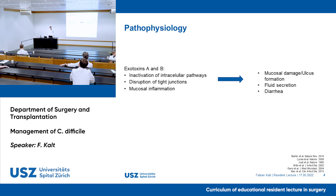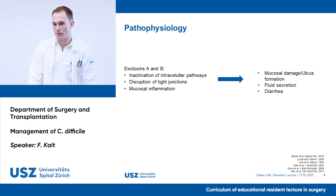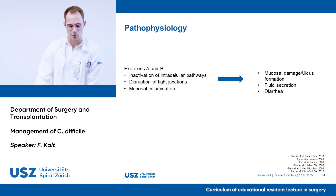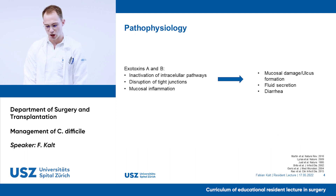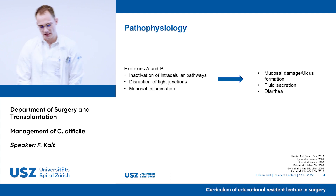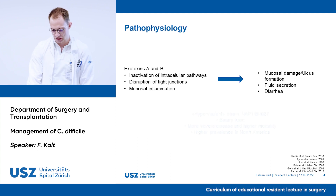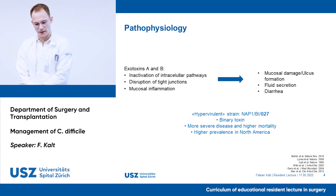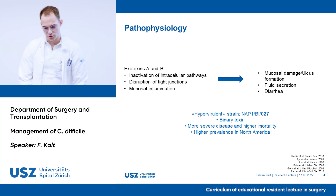Clostridium difficile is usually not invasive and there are also strains which don't produce toxins at all. There are two types of toxins, A and B, whereby toxin B is around 10 times more virulent than toxin A. The toxins disrupt the tight junctions of the mucosa, interact and inactivate intracellular pathways, and generate mucosal inflammation. These altogether lead to mucosal damage and ulcer formation, fluid secretion, and diarrhea. CDI is a bigger problem in North America, where they have more severe disease, higher mortality, and more community-acquired infection — attributable to the hypervirulent strain 027, which produces a binary toxin.